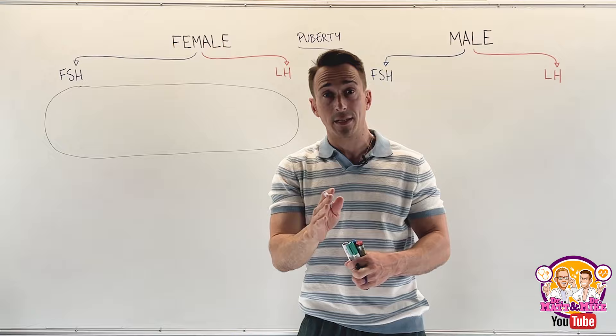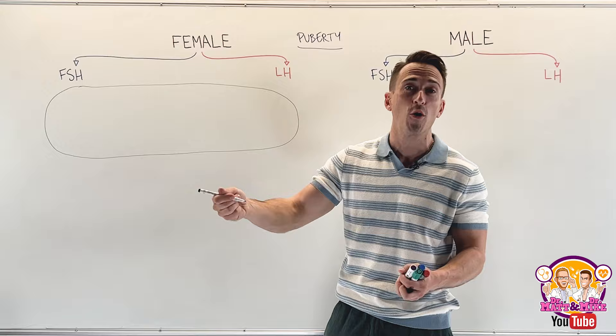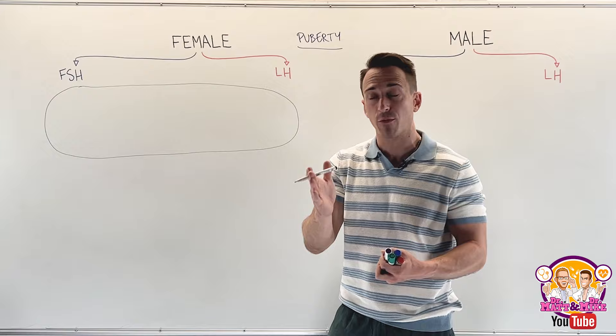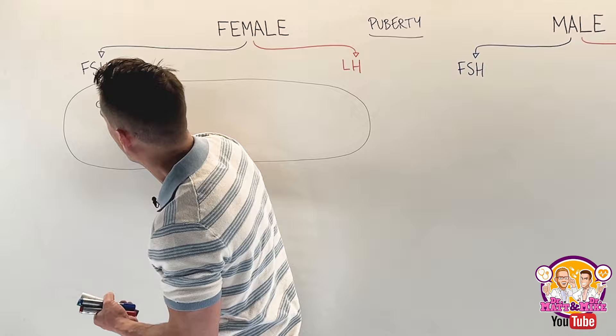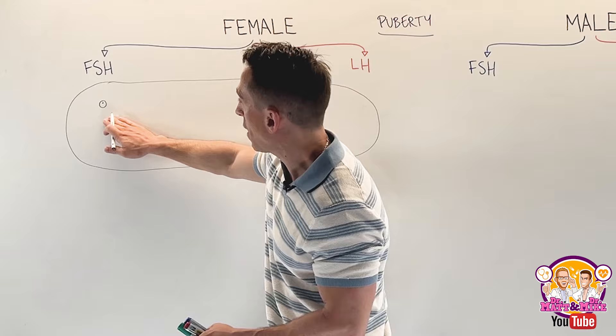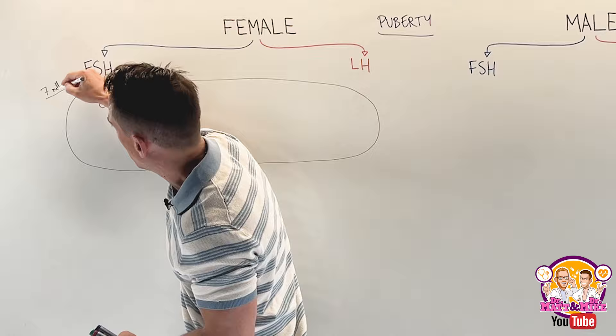What we need to understand is that in utero — when a female is developing as a fetus inside their mother's uterus, at around 20 weeks of gestation, which is halfway through fetal development — they have around 7 million eggs, which we call primary oocytes.